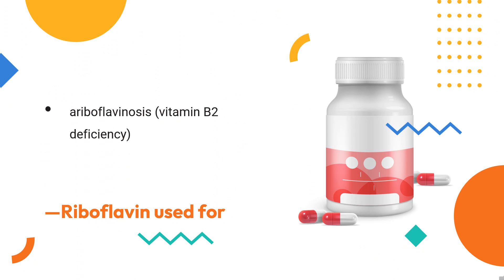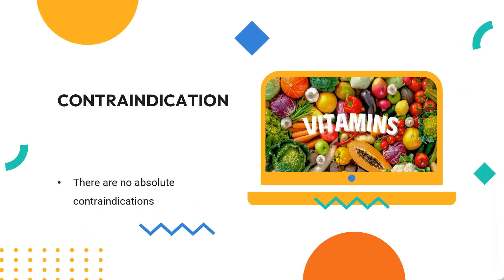What is riboflavin used for? For the treatment of ariboflavinosis, vitamin B2 deficiency. There are no absolute contraindications to riboflavin intake.